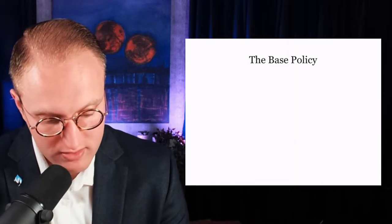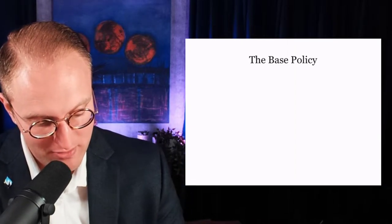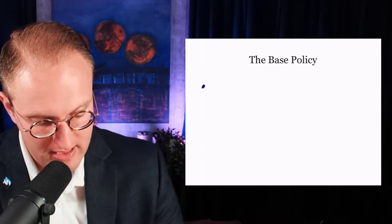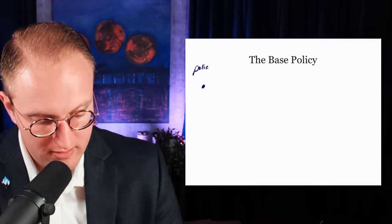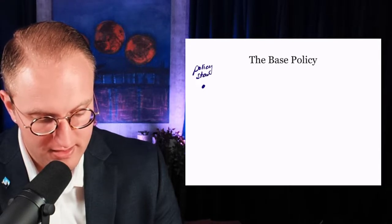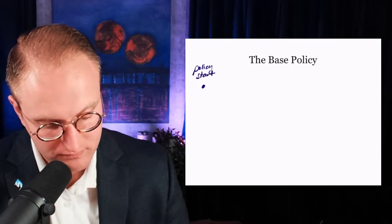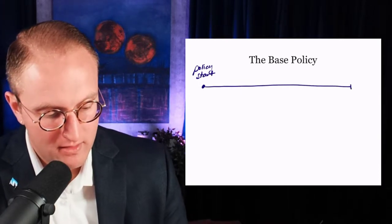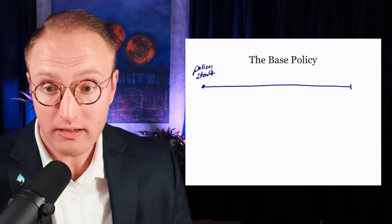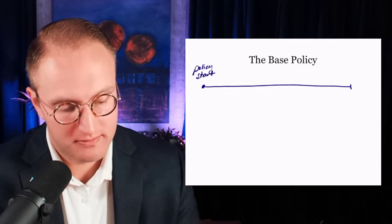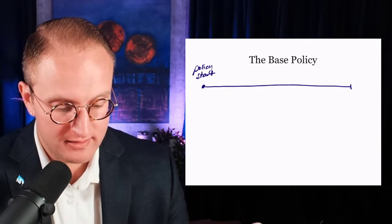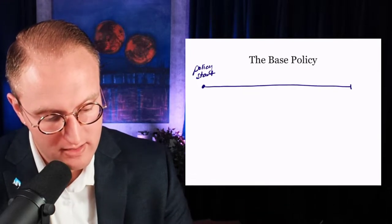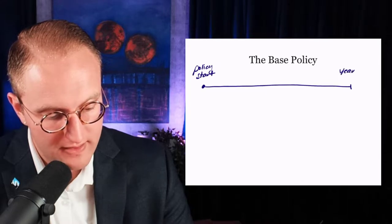Now we're going to draw some diagrams. On the left we have the policy start time, and we draw a line out to the right. At the latest time in the life cycle of a dividend-paying whole life policy is what we call the year of endowment.